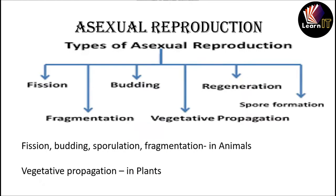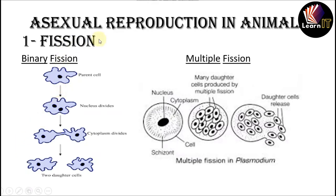Offspring produced by asexual reproduction are exact copies of the parent — in other terms, they are called clones. They are identical to their parents. Such groups of morphologically and genetically similar individuals are called clones. As we can see from the chart of asexual reproduction, it is divided into two parts: animals and plants. In animals it is divided into four parts, and in plants it is divided into vegetative propagation, which has two subtypes: natural and artificial.